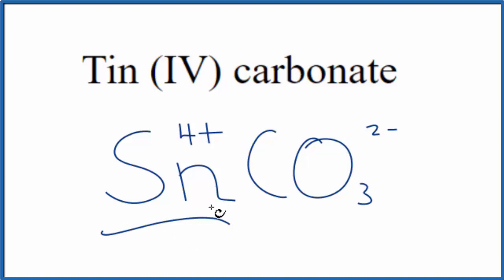At this point, we have this metal, the tin, a transition metal, and the carbonate ion, a group of nonmetals. This is an ionic compound.